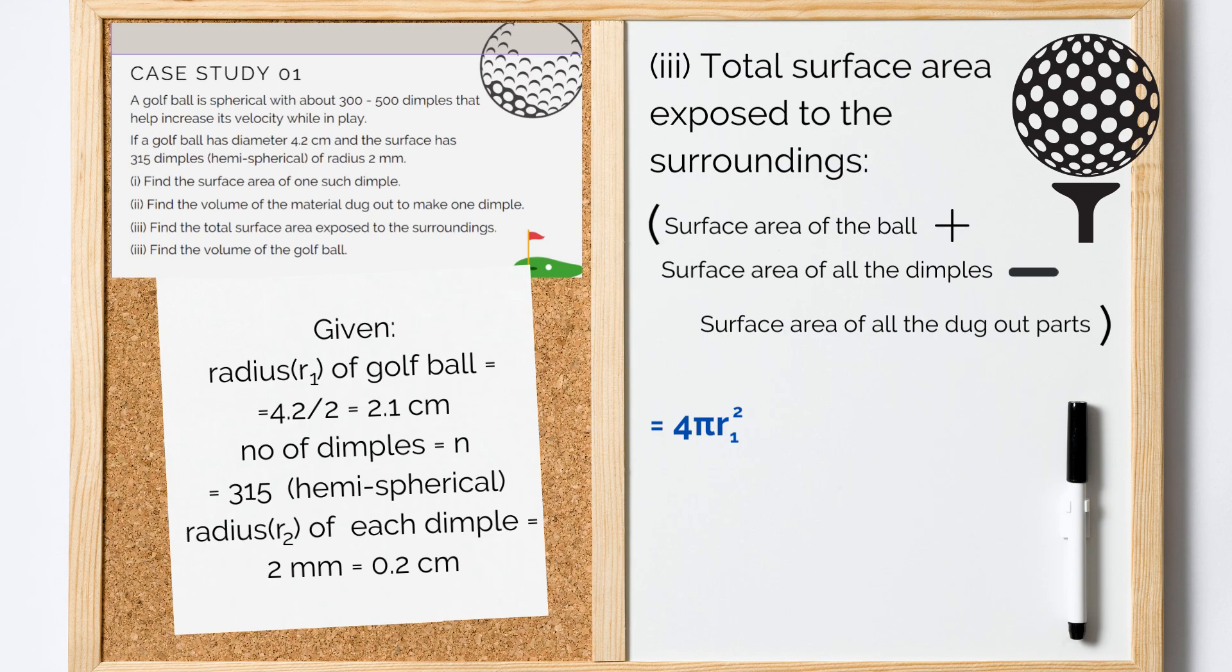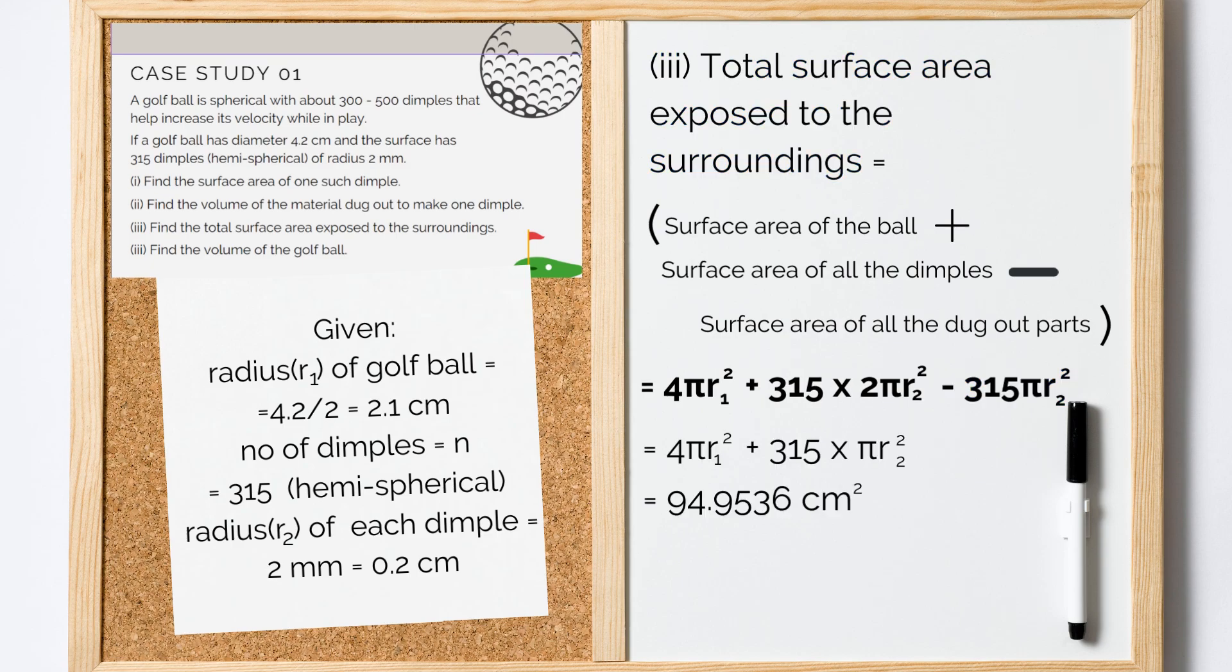4πR1² plus 315 × 2πR2² minus 315 × πR2² which gives us around 95 cm².